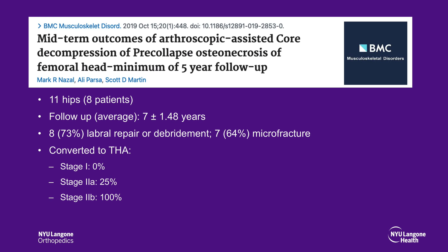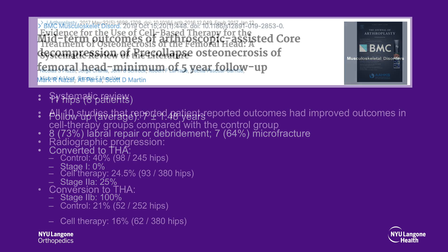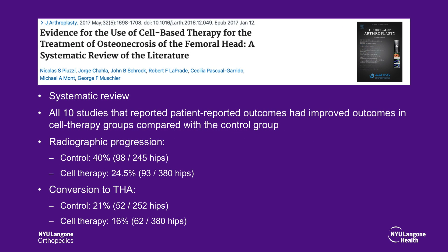Nizal and colleagues reported on 11 hips in 8 patients with an average follow-up of 7 years. They reported that during their procedure, 8 underwent labral repair or debridement and 7 underwent microfracture. They also saw that patients with more advanced disease were more likely to undergo conversion to total hip arthroplasty. In terms of cell-based therapy for treatment of avascular necrosis of the femoral head, a systematic review found limited evidence in the literature. However, all 10 studies in the review that reported patient-reported outcomes showed improved outcomes in the cell therapy group compared to the control group. On an aggregated basis, the cell therapy groups had lower rates of radiographic progression and lower THA conversion rates.